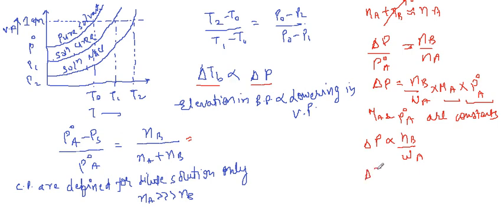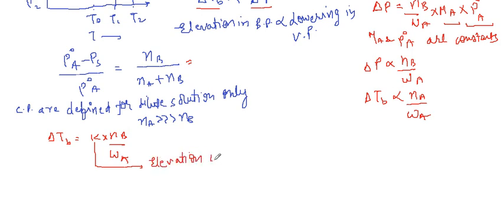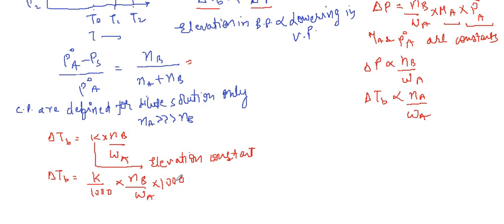So delta Tb is directly proportional to moles of solute Nb divided by mass of solvent Wa. We can write delta Tb equals K into Nb divided by Wa, where K is the proportionality constant — this term is known as the elevation constant. So delta Tb equals K divided by 1000 into Nb divided by Wa into 1000.